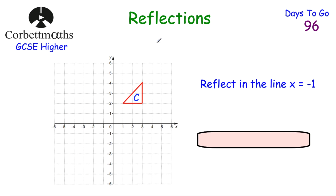Now let's look at our next transformation: reflections. With reflections you're typically asked to reflect a shape in the x-axis or y-axis, or in an equation of a line — such as an x-equals line which is vertical, or a y-equals line which is horizontal — or sometimes in the line y equals x or y equals negative x.